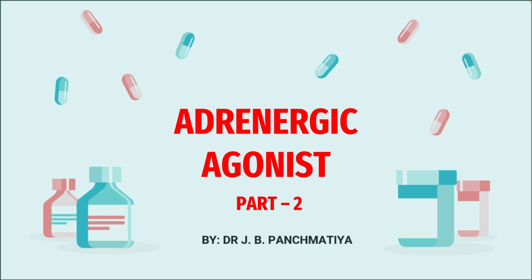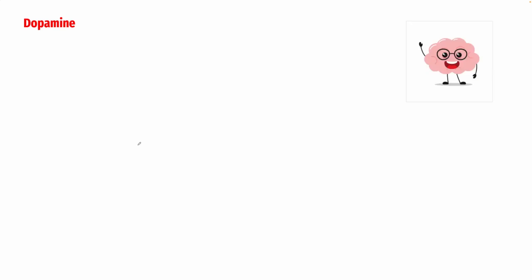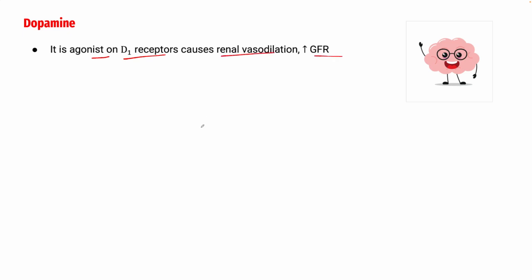Today's drug is dopamine. It is an agonist on D1 receptors, which causes renal vasodilation and increases GFR. There are five types of dopamine receptors — D1 to D5 — in which D1 is responsible for renal vasodilation. When you administer dopamine, it causes renal vasodilation leading to an increase in GFR, that is glomerular filtration rate.